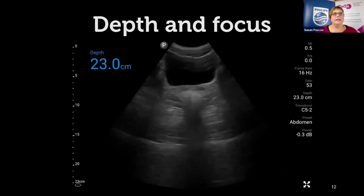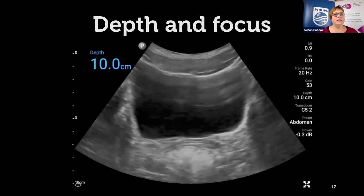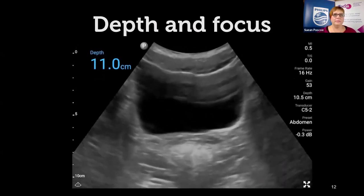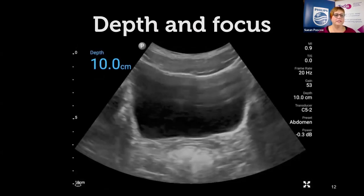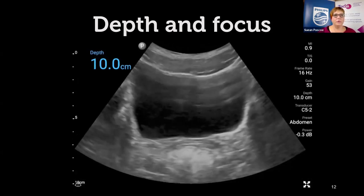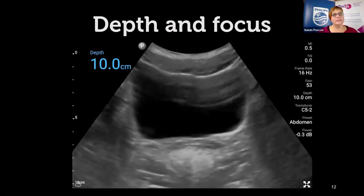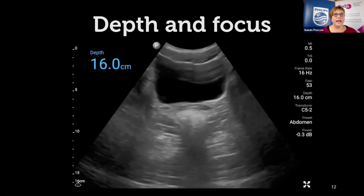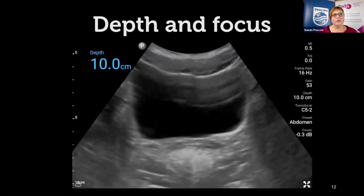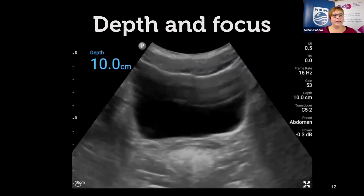Make sure depth and focus are set correctly — you want the bladder to fill the screen. As you adjust the depth in real time, set it so you can see a couple of extra centimeters behind your region of interest. On handheld and point-of-care systems, getting your depth setting correct is crucial for ensuring the focus is at the right place. If you have a focal zone on your cart system, you need to set it at the back of the bladder.